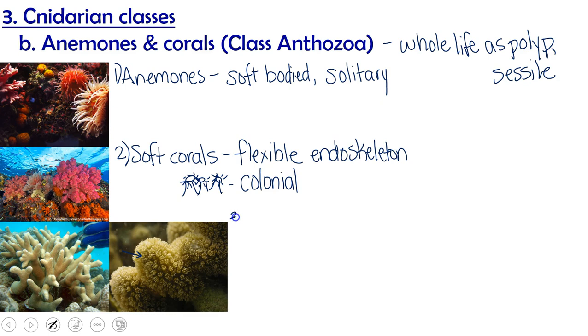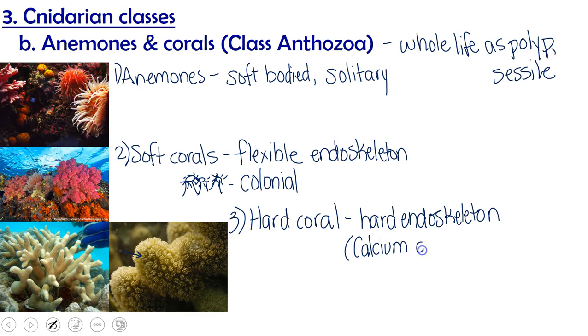So then our last group is our hard corals. Underneath the soft hydrostatic skeletons of their polyps, these guys have a hard endoskeleton made of a mineral called calcium carbonate, which we sometimes abbreviate as CaCO3. This mineral is going to crop up a lot in invertebrate biology. It's what many endoskeletons are made of in the ocean. This hard endoskeleton is what allows them to build reefs. And just like our soft corals, these guys are also colonial. So that's our anthozoans.